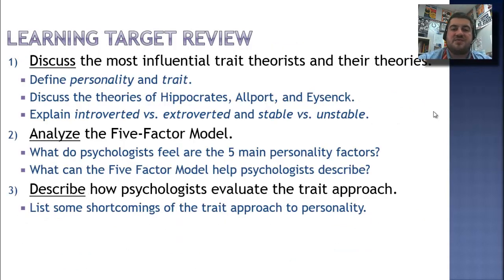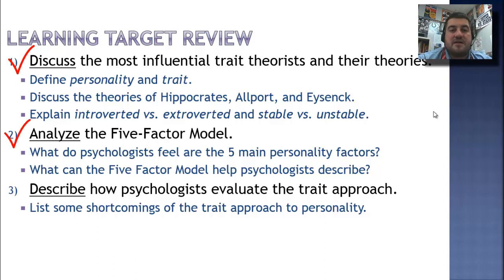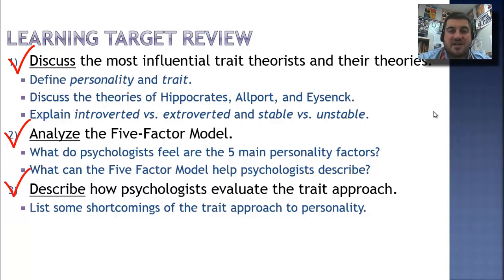Let's review our learning targets. We discussed the three most influential trait theorists and their theories, and we came up with our definitions of personality and traits. We analyzed the five-factor model and talked about the five main personality factors — know those. And we described how psychologists view and evaluate the trait approach. That's all for section one. Hopefully you found this interesting. Fill out those learning targets, and I'll see you back in class. Have a good night.